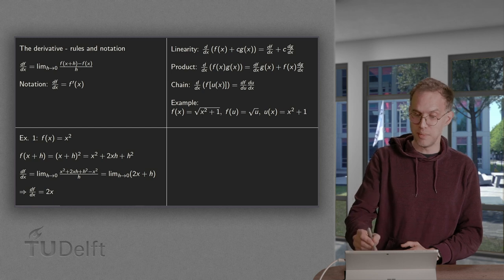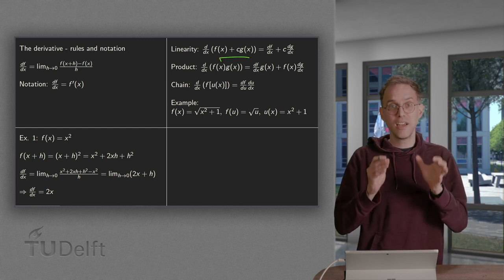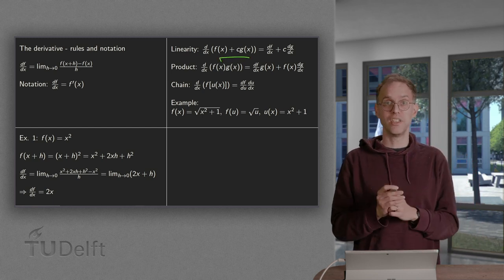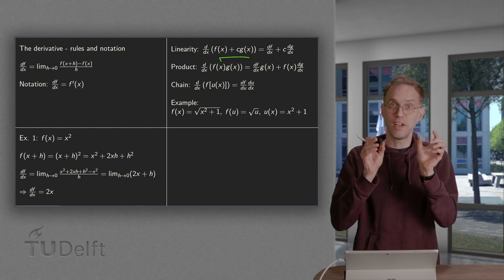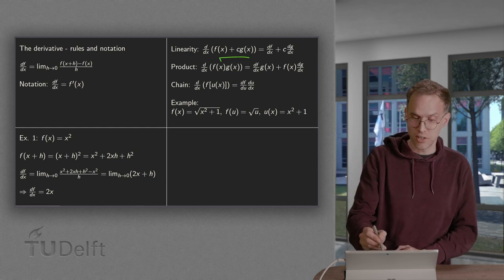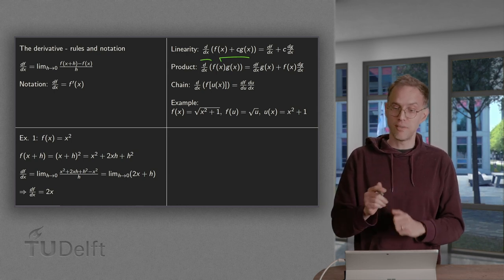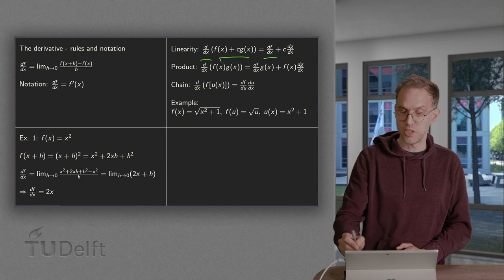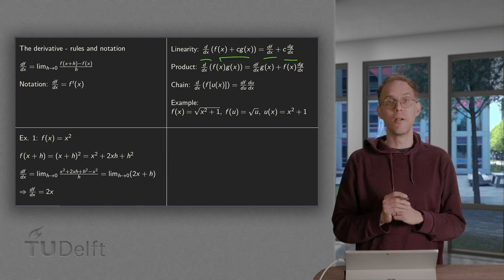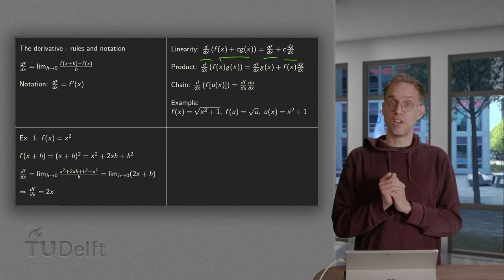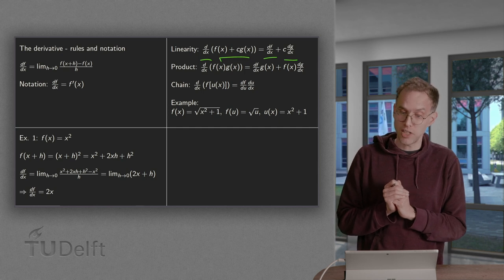What does this mean? Linearity means that the d/dx, the derivative of a linear combination of f and g. So the d/dx of f + cg equals the derivative of f plus c times the derivative of g. So we can easily compute derivatives of linear combinations of functions.